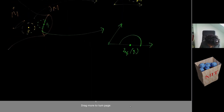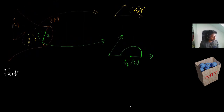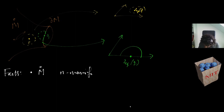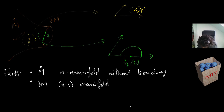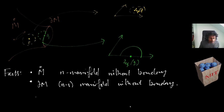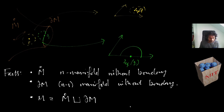Some facts: the interior is an n-dimensional manifold in the usual sense. Moreover, the boundary is an (n−1)-dimensional manifold, again without boundary. And of course M can be written as the disjoint union of the interior of M and the boundary.